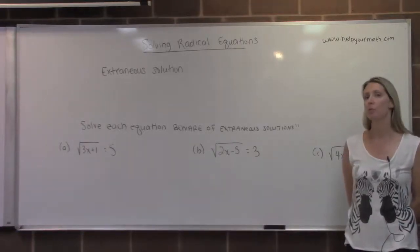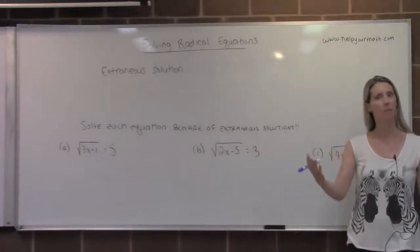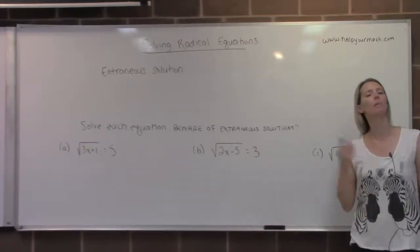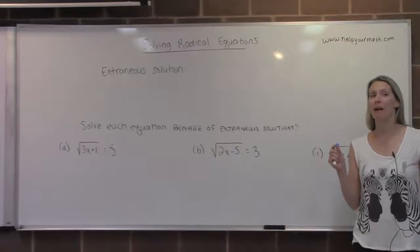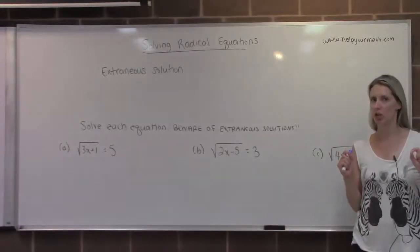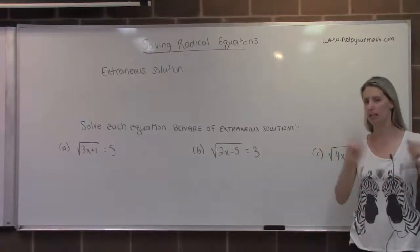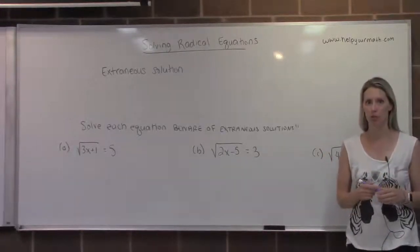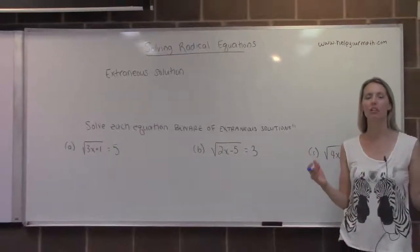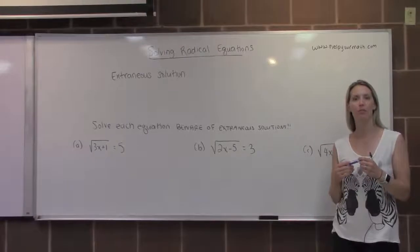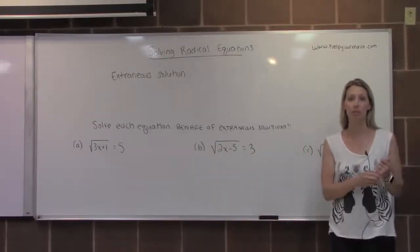There are certain things we do in mathematics that don't necessarily change an equation — like we can add the same amount to both sides, or multiply the same amount to both sides. But there are certain things in math that actually do ever so slightly change the problem, and so that creates these extraneous solutions. Extraneous solutions are values we get in the solution set that aren't actually solutions because they lead to some false statement.